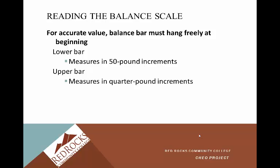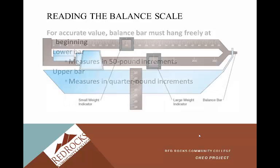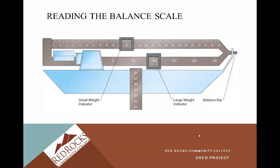The lower bar measures in 50-pound increments — starting at 50, then 100, 150, 200, and so on. The upper bar measures in quarter-pound increments. You have a small weight indicator at the top for more precise readings, and a large weight indicator at the bottom that gets you to the nearest 50-pound increment. When weighing somebody, you move the large weight indicator first.